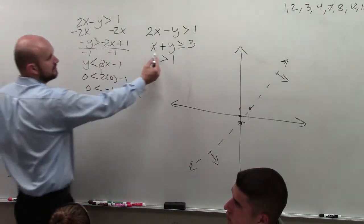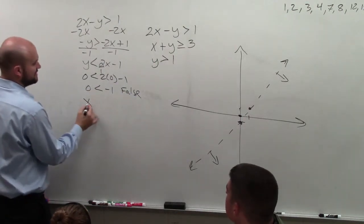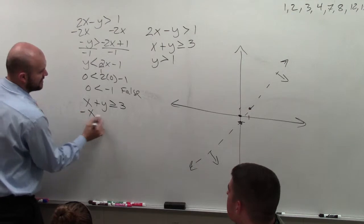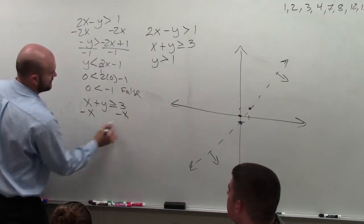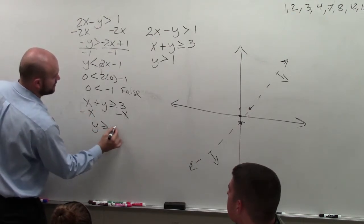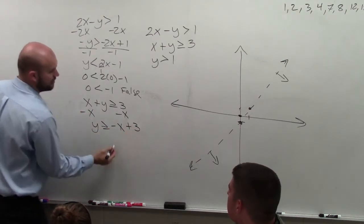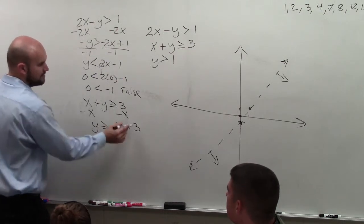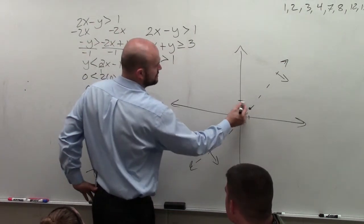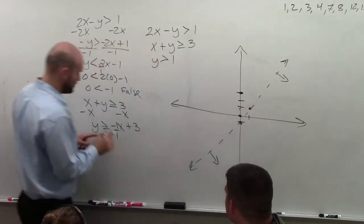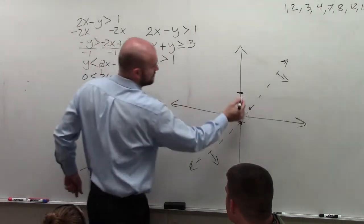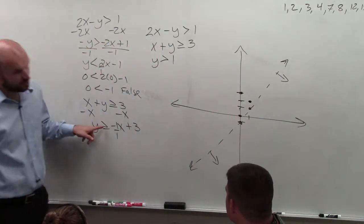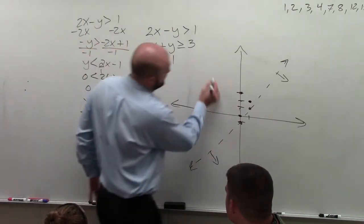The next one — we've got to rewrite it in slope-intercept form. Just subtract x, so I have y is greater than or equal to negative x plus 3. That has a slope of negative 1 over 1. Y-intercept is 3, so go up to 3, then go down 1 over 1. Since it's greater than or equal to, that's a solid line.